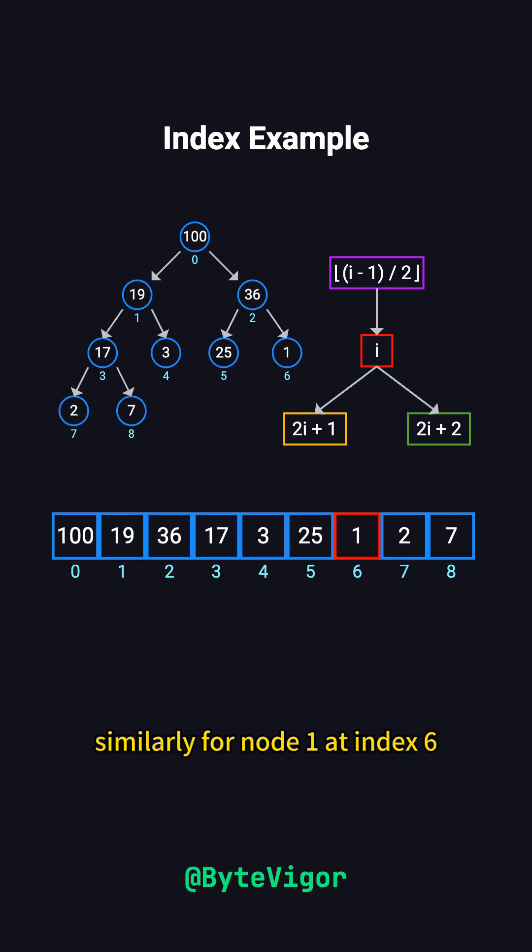Similarly, for node 1 at index 6, its parent is at 6 minus 1 divided by 2, rounded down to 2, holding the value 36.